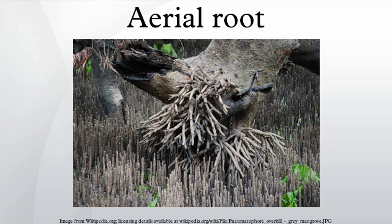Stranglers: the banyan tree is an example of a strangler fig that begins life as an epiphyte in the crown of another tree. Its roots grow down and around the stem of the host, their growth accelerating once the ground has been reached. Over time, the roots coalesce to form a pseudotrunk, which may give the appearance that it is strangling the host. Another strangler that begins life as an epiphyte is the Moreton Bay fig of tropical and subtropical eastern Australia, which has powerfully descending aerial roots.